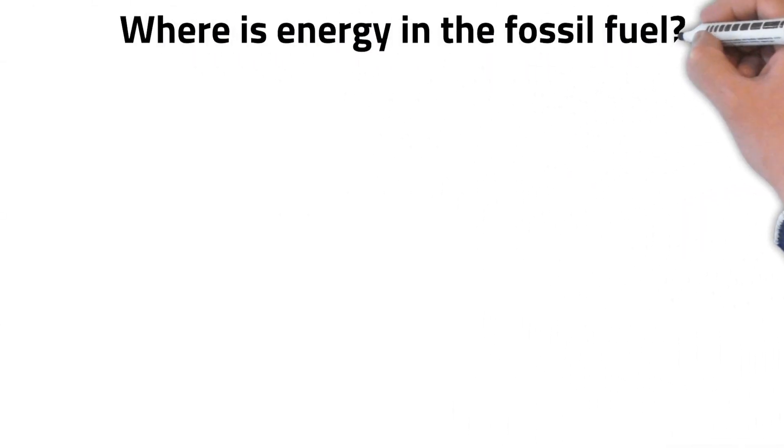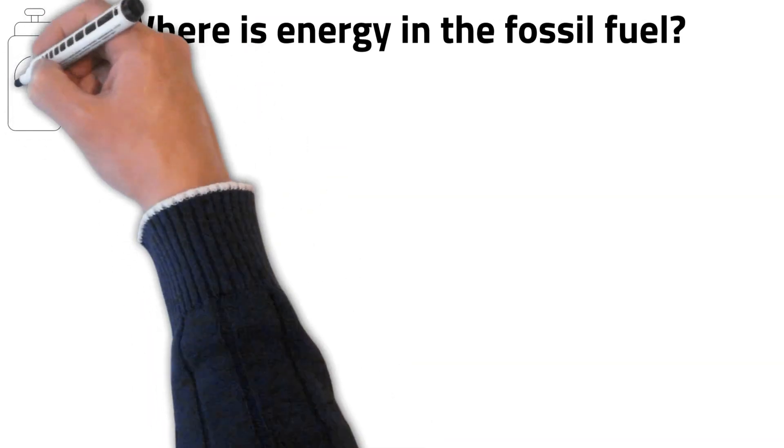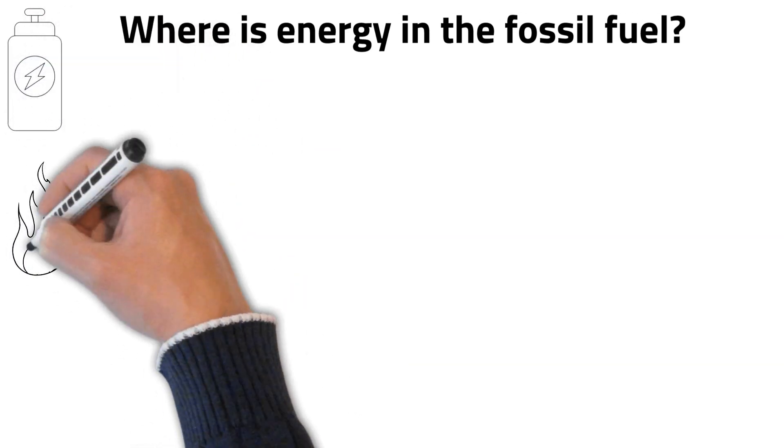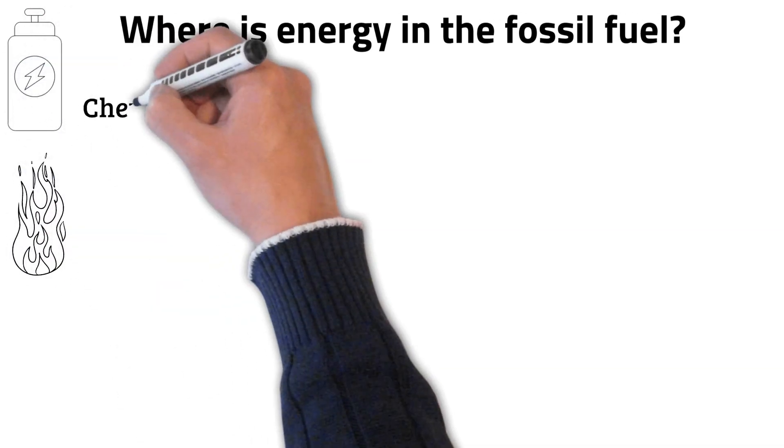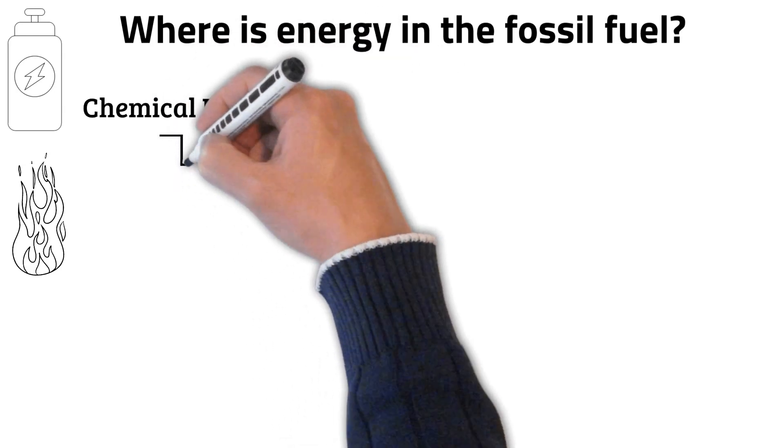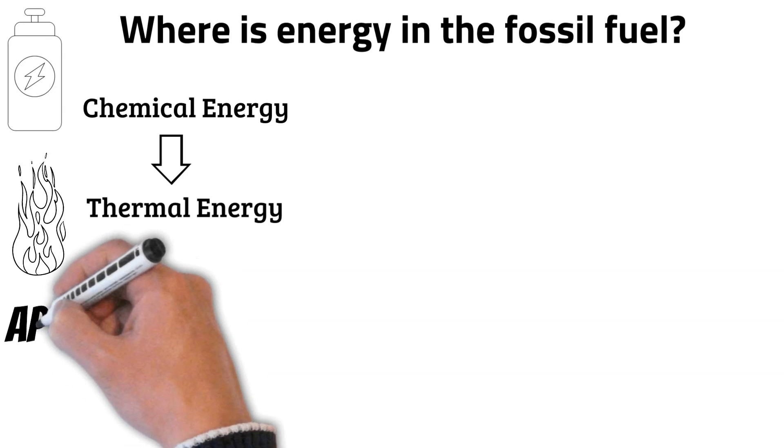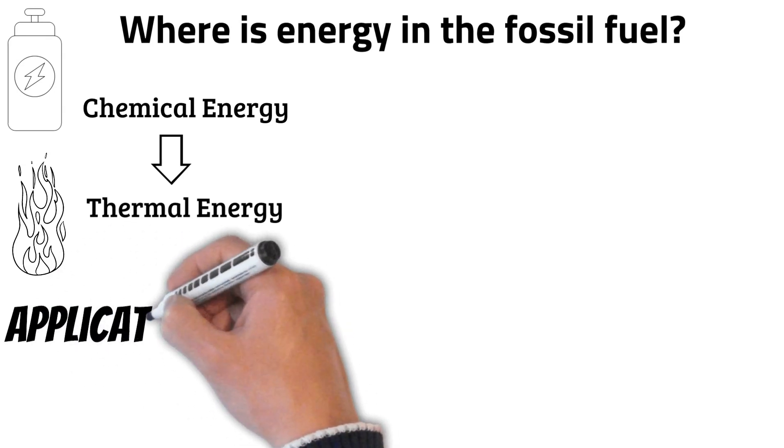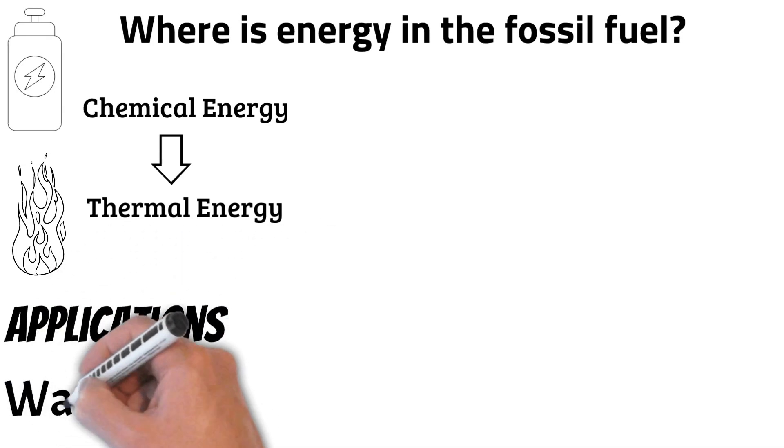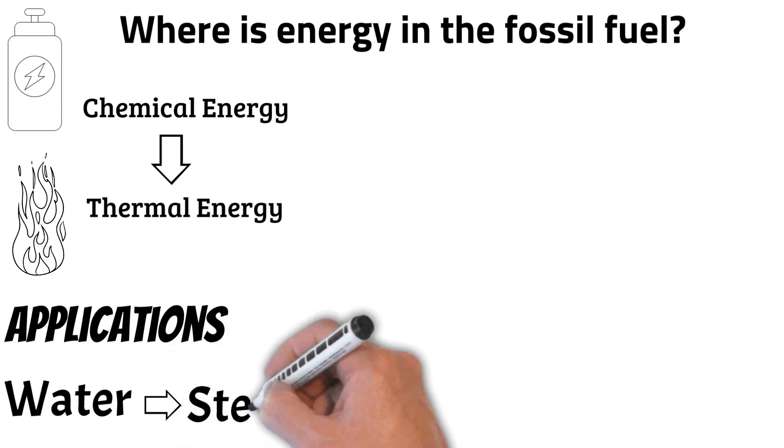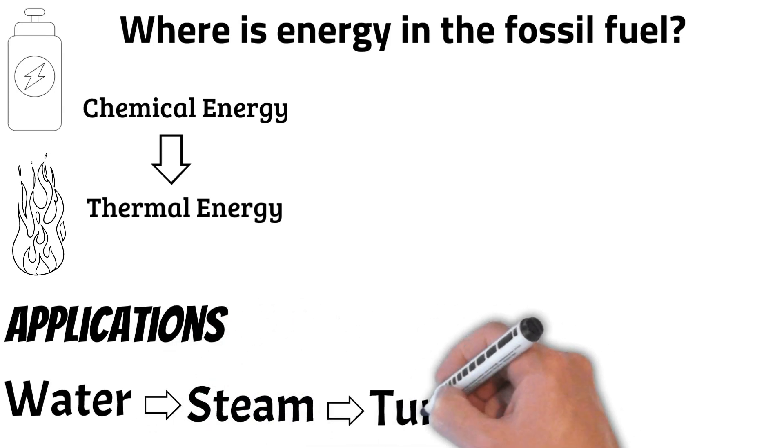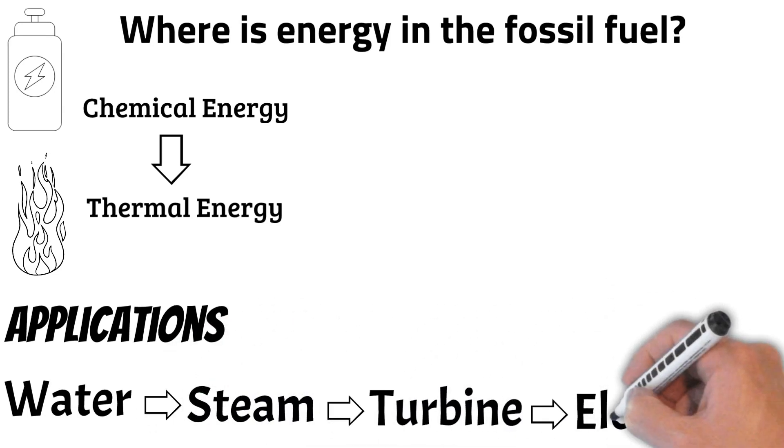Now the question is where is energy in the fossil fuel? Actually, fossil fuels contain large quantities of chemical energy, which is released as heat during combustion. When we burn fossil fuel, the chemical energy is converted into thermal energy and we use that thermal energy for different applications like in power plants we use it to convert water into steam in boilers and then use that steam to run a turbine to generate electricity.